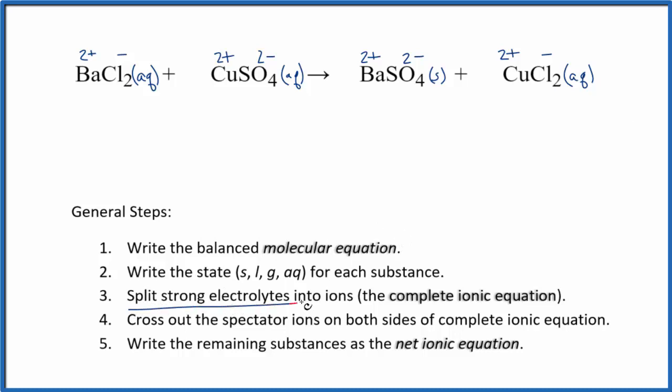Now we can split them up into the strong electrolytes. That's going to give us the complete ionic equation. We have Ba2+. And I'm not going to write aqueous after each one. We'll do that at the end. Plus, we have that Cl- chloride ion. Subscript means we have two of those.